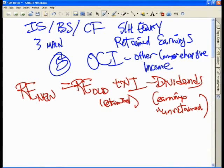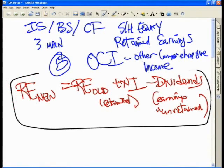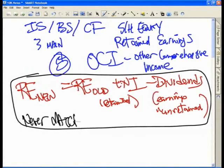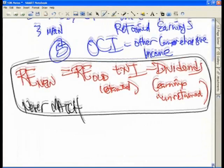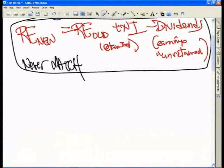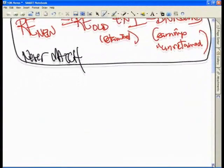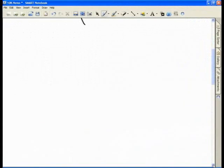However, if you were to do this actual calculation that we just wrote down here, you will never match. Why will you never match? Because you will have several items in which you need to reconcile as well to make this happen. And that is the other comprehensive income statement.